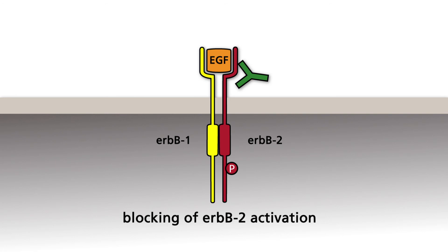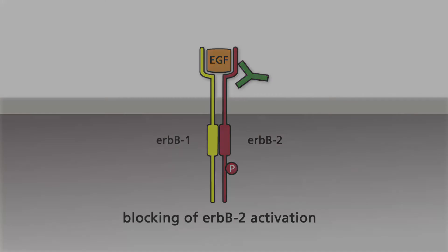Trastuzumab is indicated for the treatment of breast and stomach tumors with increased ERB-B2 expression. The antibody is also effective in patients whose tumors show ERB-B2 gene amplification but do not show ERB-B2 overexpression via immunohistochemistry. This could be the result of tumor cells shedding the ERB-B2 protein, which in turn results in a lower immunohistochemical signal.